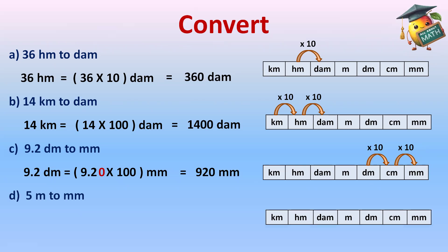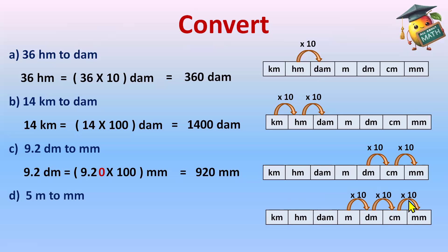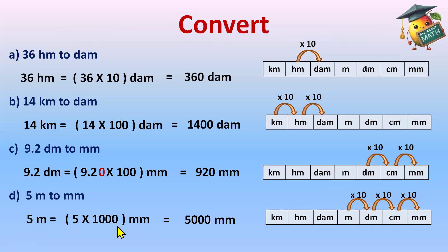5 meter to millimeters. Make a chart — meter is here and we are moving to millimeter. First jump from meter to decimeter, then decimeter to centimeter, then centimeter to millimeter — three jumps. We multiply 10 three times, that is 1000. So, 5 meter × 1000 = 5000 millimeters.